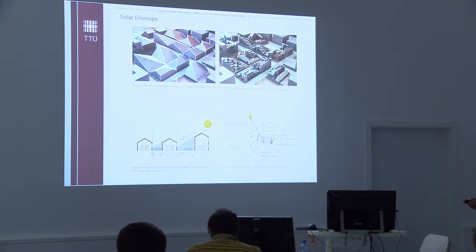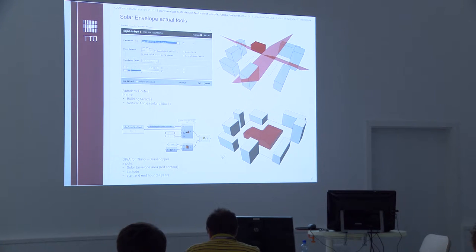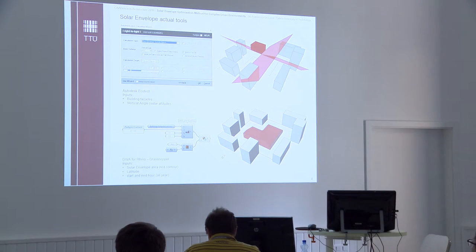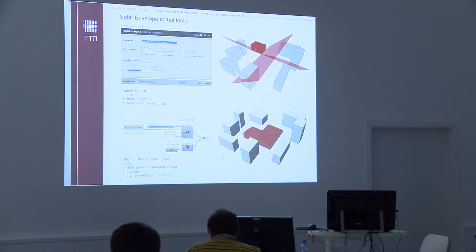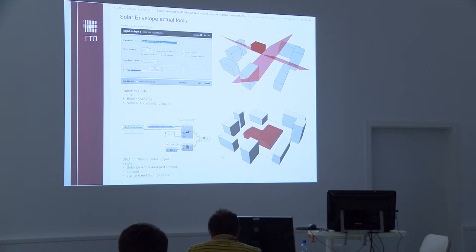Nowadays, many CAD tools offer the possibility to generate solar envelopes automatically. For example, Autodesk Ecotect — quite old-school software, no longer in commerce, but quite interesting and educational. In this case, the inputs are the facade of the building that must not be shaded, the plot on which we want to build, and when we give the sun angle the software automatically generates — in this case — two planes, because we selected two facades to use as the limit for the solar envelope on this plot.